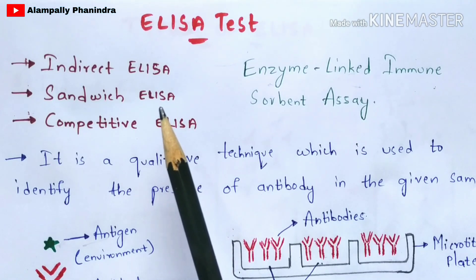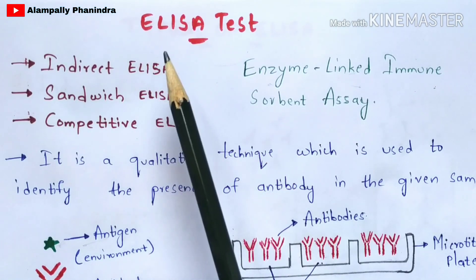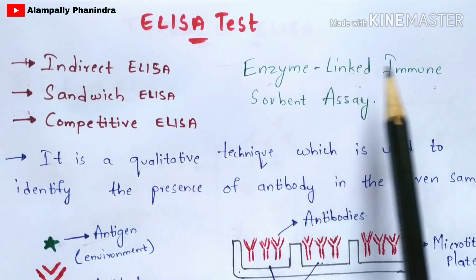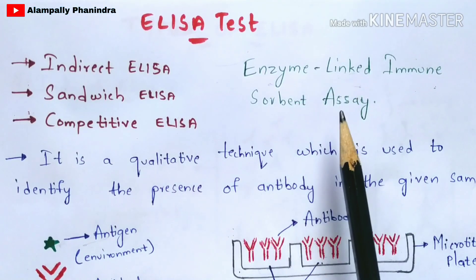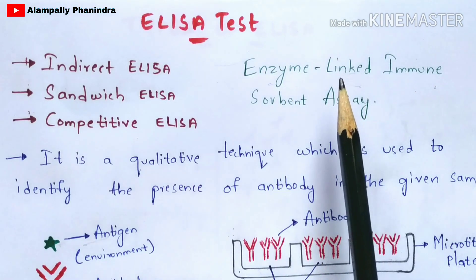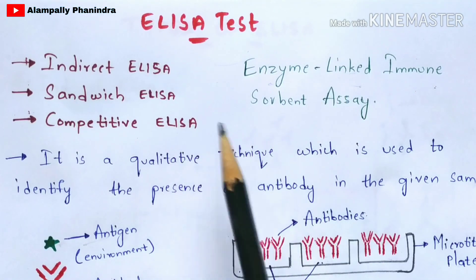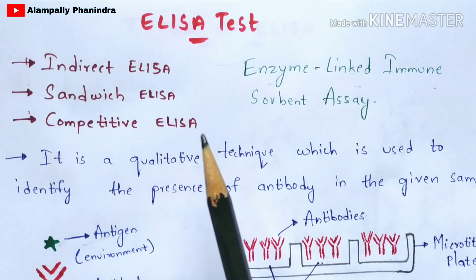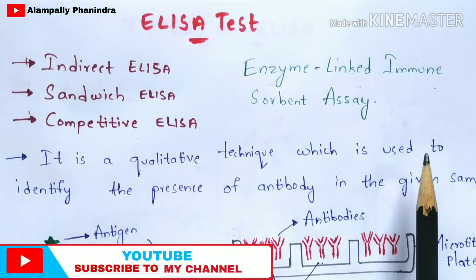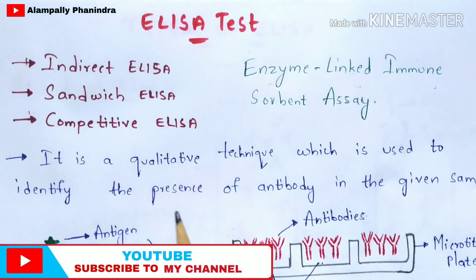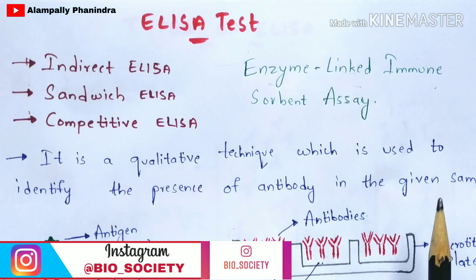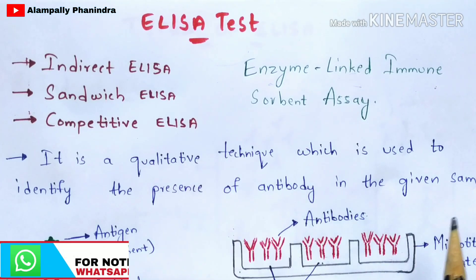What is the full form of ELISA? ELISA stands for Enzyme-Linked Immunosorbent Assay. The definition: it is a qualitative technique which is mainly used to identify the presence of antibodies in a given sample.